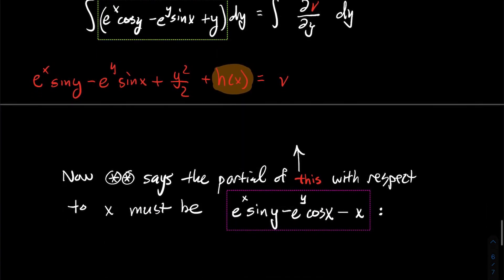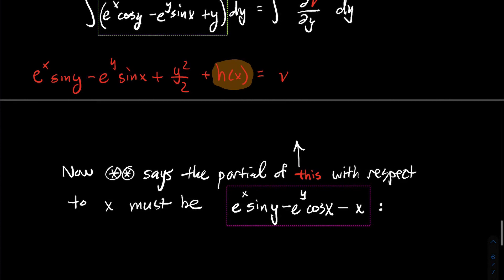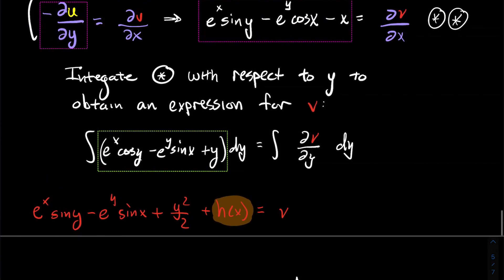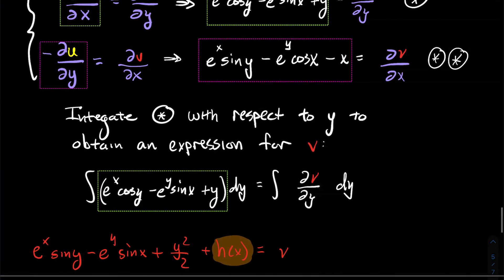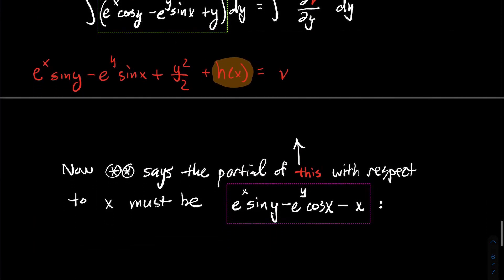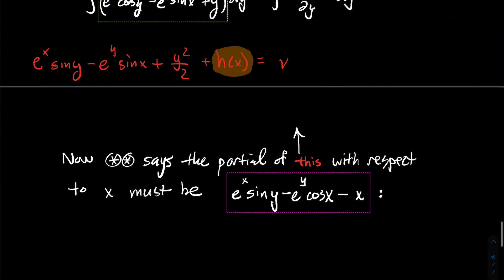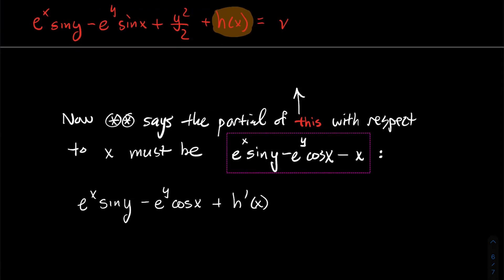So we have an expression for V, but we don't know what specific function of x is there — what is h? We win the game if we can say what h looks like. Looking at equation double star: it tells us what the partial of V with respect to x looks like — it has to be e^x sin(y) minus e^y cos(x) minus x. And now I have an expression for V, so I can take the partial derivative of that with respect to x.